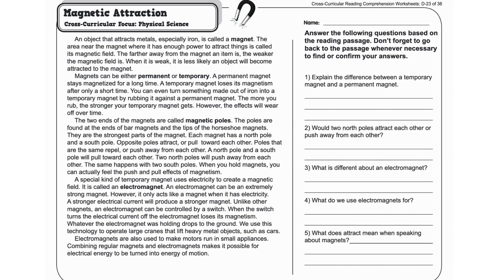Magnets can be either permanent or temporary. A permanent magnet stays magnetized for a long time. A temporary magnet loses its magnetism after only a short time. You can even turn something made out of iron into a temporary magnet by rubbing it against a permanent magnet.